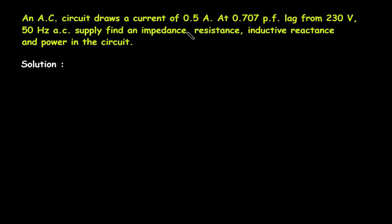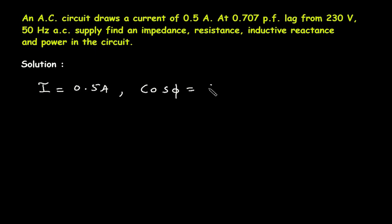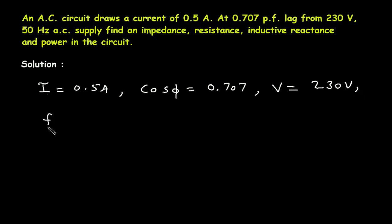First, we will write what is given. Current I is equal to 0.5 Ampere. Power factor cos φ is equal to 0.707. Voltage V is equal to 230V. Frequency f is equal to 50Hz.